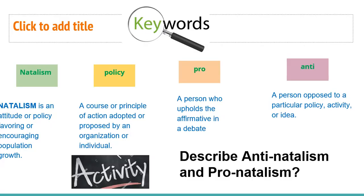Here we have the keywords. You can pause the video now and read through these keywords to understand the meaning of natalism, policy, pro and anti. Anti means a person who opposes a particular policy, activity or idea. Pro means a person who upholds it. Policy is a course or principle of action adopted or proposed by an organization or individuals. Natalism is an attitude or policy favoring or encouraging population growth.